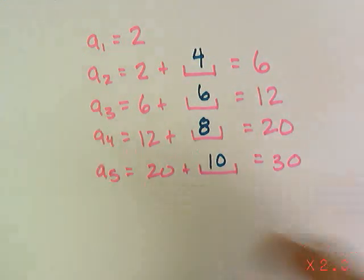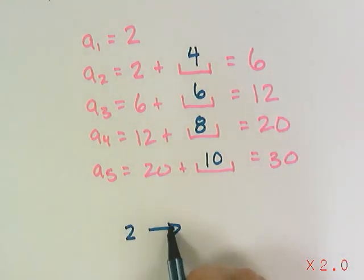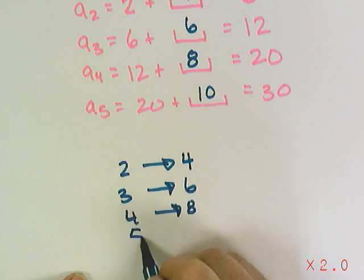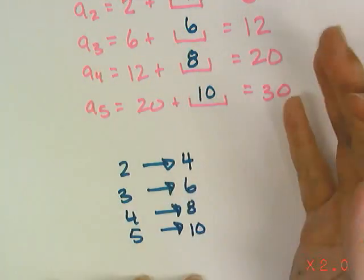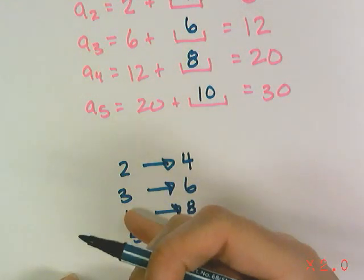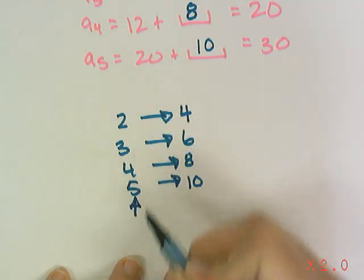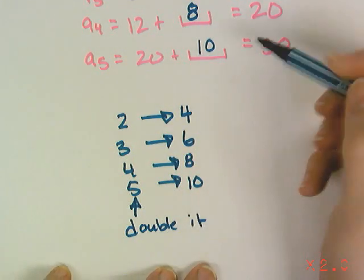But my real job is to figure out how 2 relates to 4, how 3 relates to 6, how 4 relates to 8, and how 5 relates to 10. And whatever this relation is, is going to be the same. In this case, all I'm doing is I'm taking this number here and I'm doubling it. And that's what gets added.